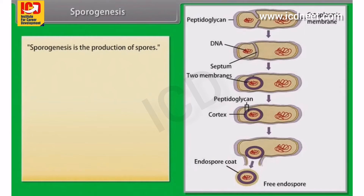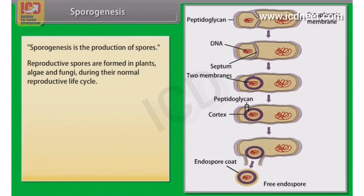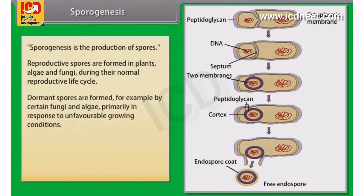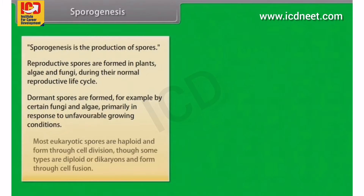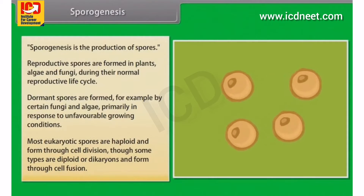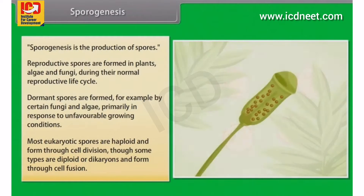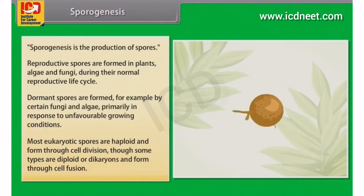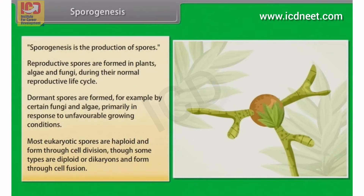Sporogenesis is the production of spores. Reproductive spores are formed in plants, algae and fungi during their normal reproductive life cycle. Dormant spores are formed, for example, by certain fungi and algae, primarily in response to unfavorable growing conditions. Most eukaryotic spores are haploid and formed through cell division, though some types are diploid or dicaryons and formed through cell fusion.